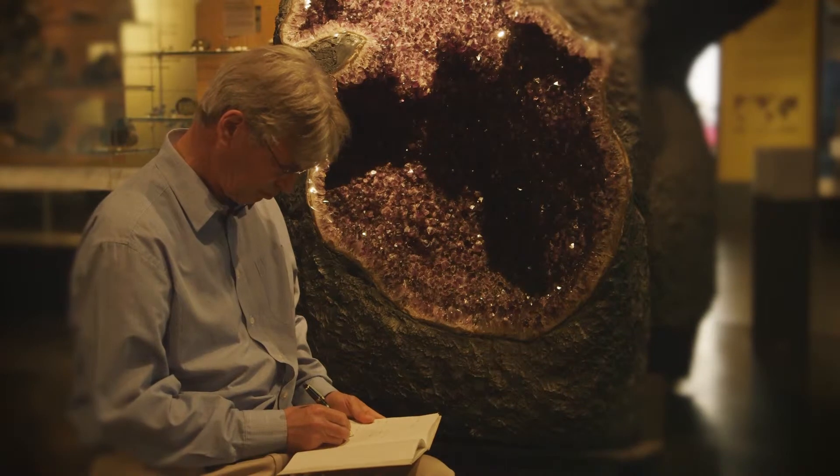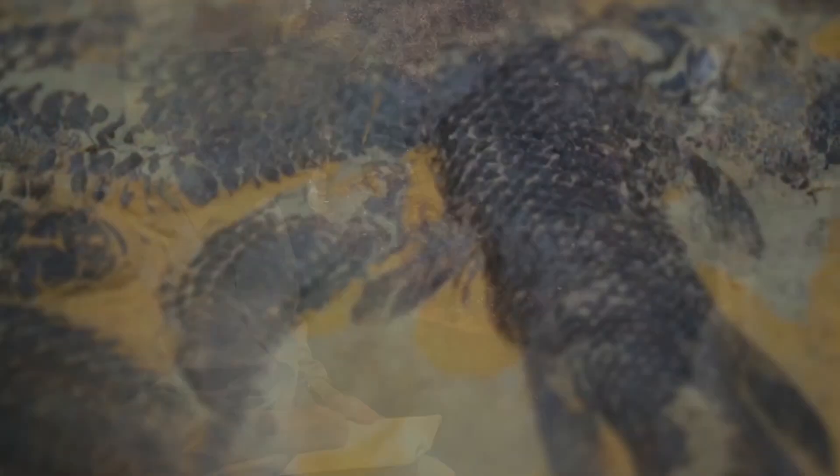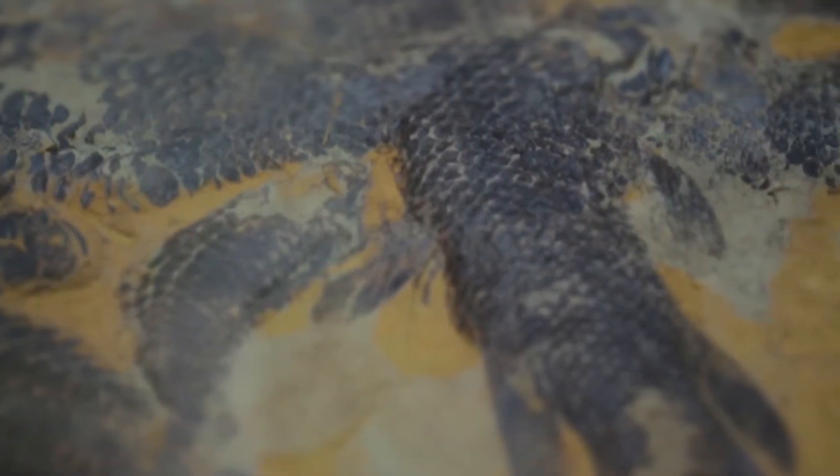The natural history collection is divided into five sections. We have Earth systems, which looks at geology and the geological processes of the Earth. We have paleobiology, looking at fossils.